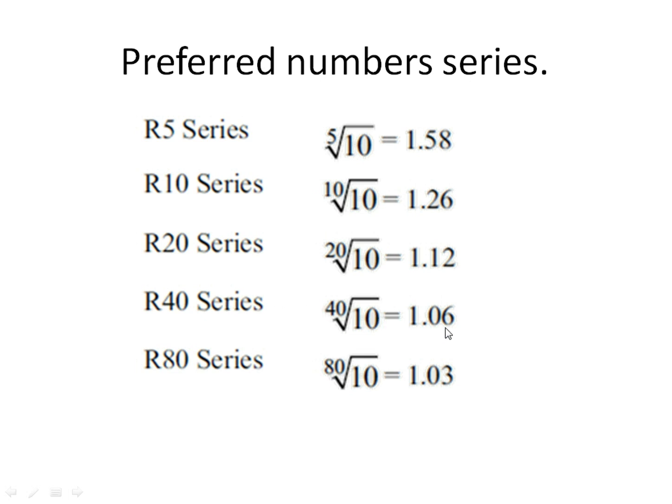If a company is using R80 series, that is 80th root of 10, then a company can change 3% in the original characteristic of that particular product.